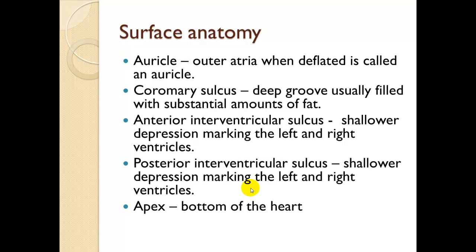Surface anatomy terms: an auricle is a deflated atrium — the outer atria when deflated is called an auricle. The coronary sulcus is a deep groove usually filled with a substantial amount of fat as an extra energy source. The anterior interventricular sulcus is a shallower depression marking the left and right ventricles on the front side, and the posterior interventricular sulcus marks them on the back. The apex is the bottom of the heart.